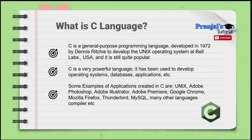Some examples of software or applications created in C are: Unix operating system, Adobe Photoshop, Adobe Illustrator, Adobe Premiere, Google Chrome, Mozilla Firefox, Thunderbird, MySQL, and compilers of different programming languages. So many major software applications are developed using C language.